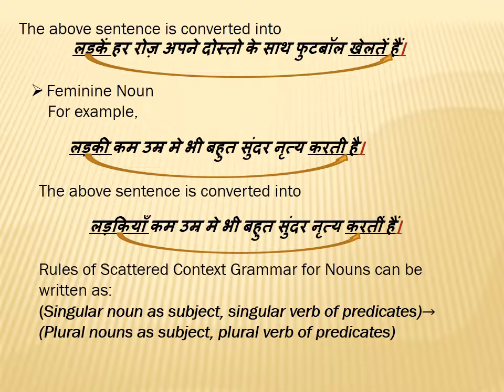Similarly, if we have feminine noun ladki: 'kam umr mein bhi bhot sundan rite kerti hai,' then the sentence is converted into 'ladkiaan kam umr mein bhi bhot sundan rite kerti hai.' The rules for scattered context grammar are: singular noun as subject, singular verb of predicates.